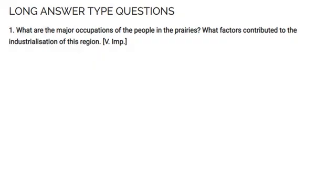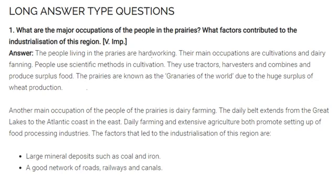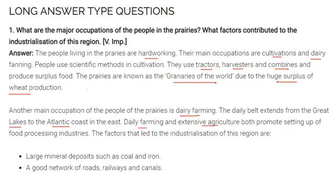What are the major occupations of the people in the prairies, and what factors contributed to the industrialization of this region? The people living in prairies are hardworking. Main occupations are cultivation and dairy farming. People use scientific methods in cultivation — tractors, harvesters, and combines — and produce surplus food. Prairies are also known as the granaries of the world due to the huge surplus of wheat production. The dairy belt extends from the Great Lakes to the Atlantic coast in the east. Dairy farming and extensive agriculture both promote setting up of food processing industries. Factors that led to industrialization include large mineral deposits like coal and iron, and a great network of roads, railways, and canals.